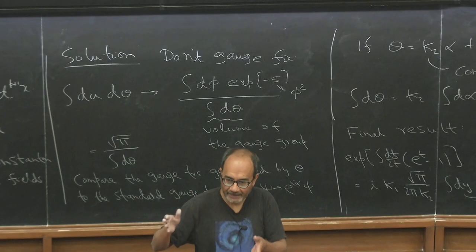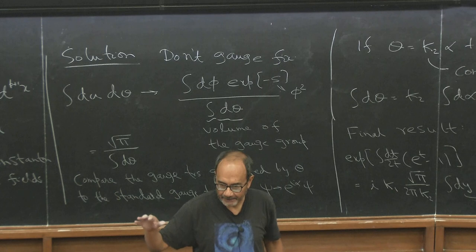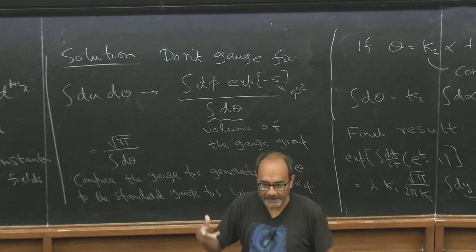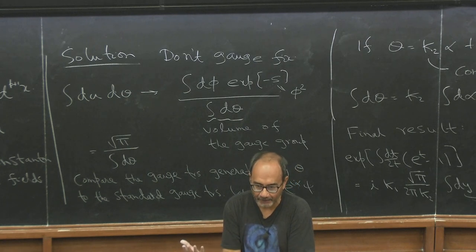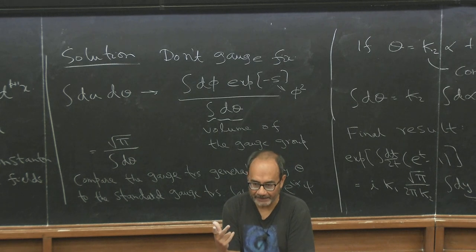Yeah, so string theory doesn't know about this replacement. String theory gives you a gauge fixed form for all DP branes which works most of the time, except for d instantons. That gauge fixing is wrong. If you do carry out the gauge fixing as for a DP brane, you get this u and v, the ghosts.